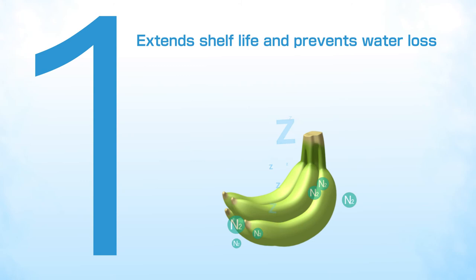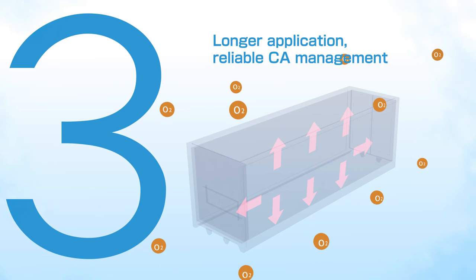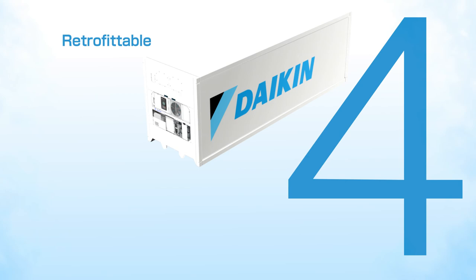Daikin Active CA offers four main advantages. One: Puts the product to sleep on the first day, which extends shelf life and prevents water loss. Two: Maintains the humidity inside the container, widening your cargo variety. Three: Longer CA application, reliable and precise CA management with positive pressure. Four: Retrofittable CA options to expand your business.